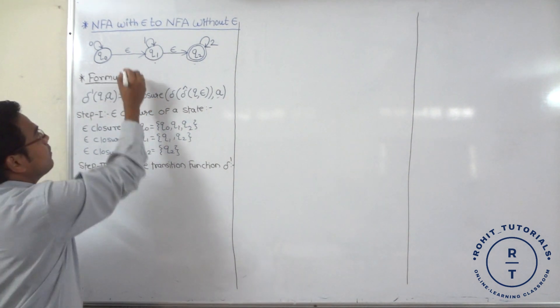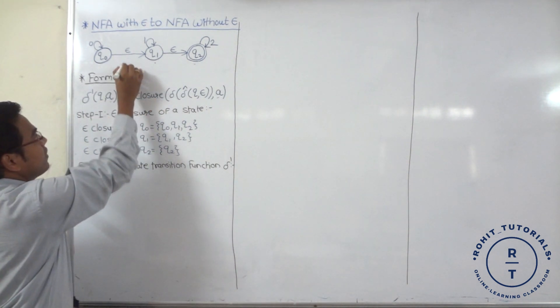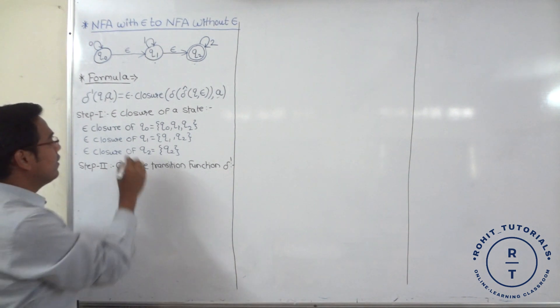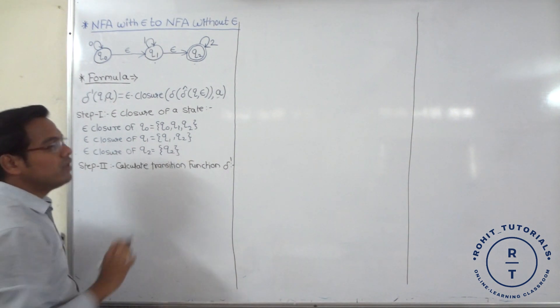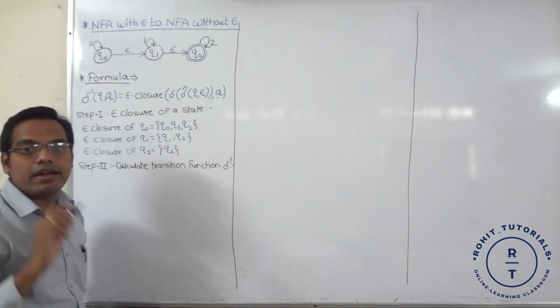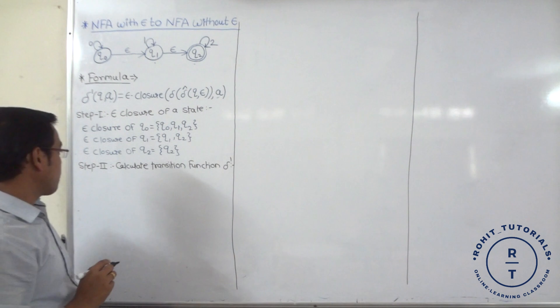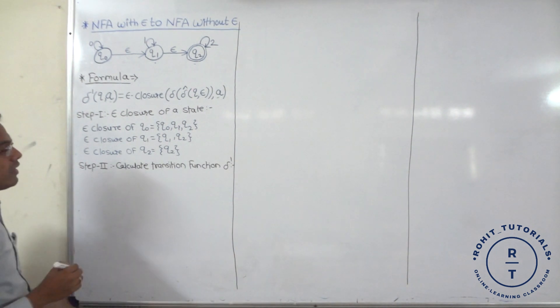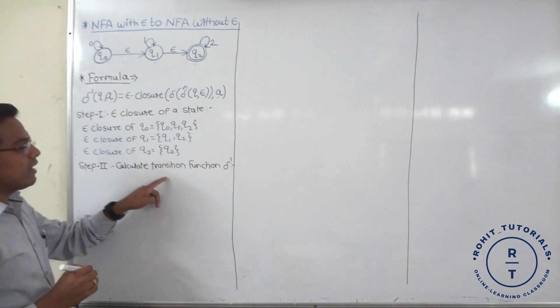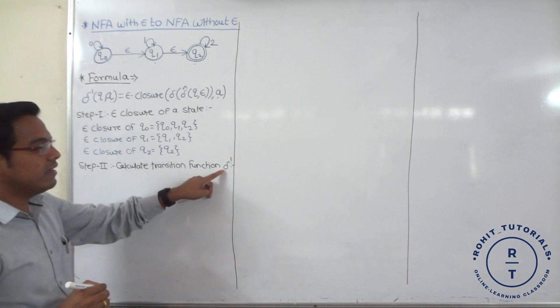So epsilon closure of Q1 is only Q1 and Q2. Now next is Step 2: calculate the transition function delta dash.